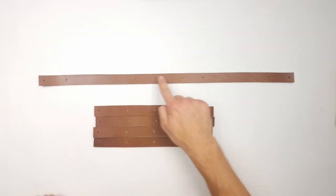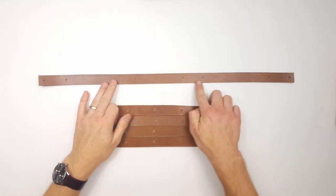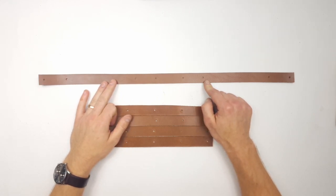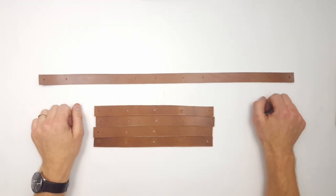...we need to add rivets to all these holes. We want these four holes to have the longer type of rivets that is described in the instructions. These two ones are going to be the shorter ones.